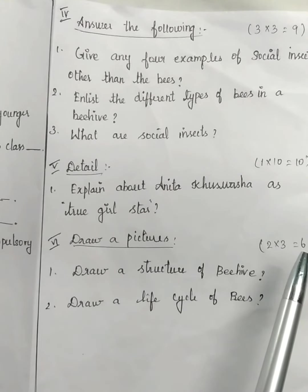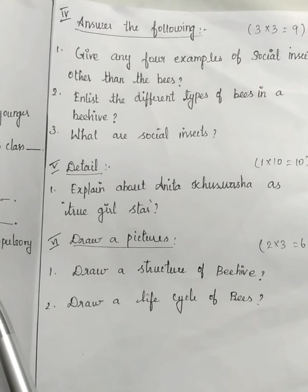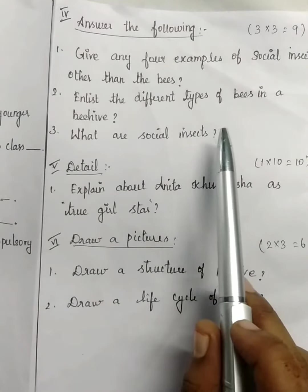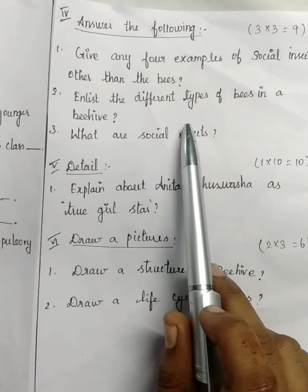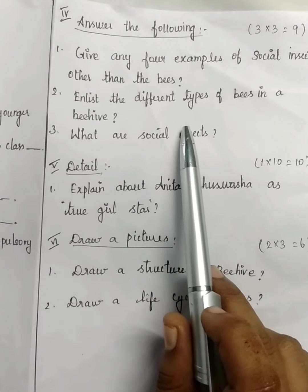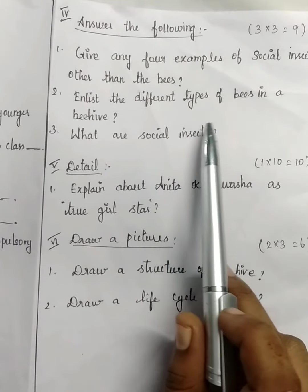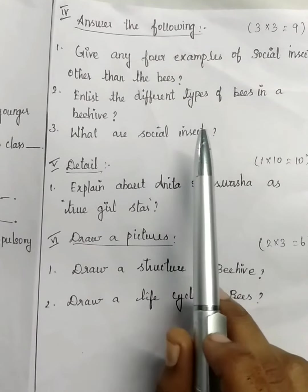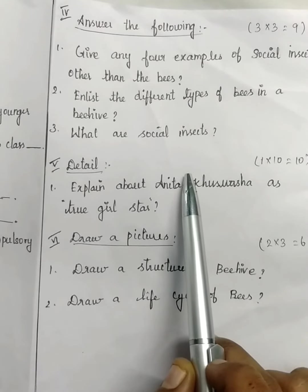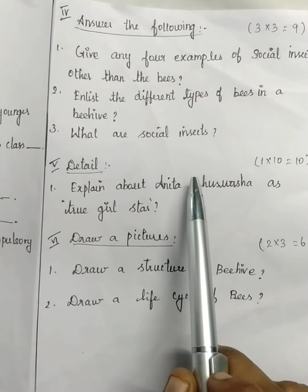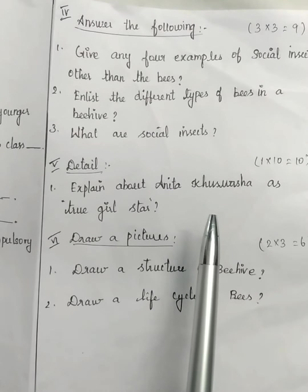If you prepare well for 1 word, you get 10 marks. In the 2-mark question, each question carries 3 marks; in 3 questions, you totally get 9 marks. In the detail question, 10 marks. Do you remember — when you finish your test, get a parent signature.